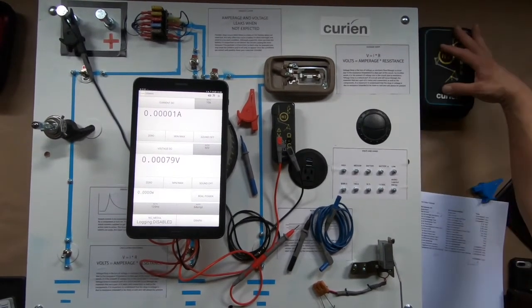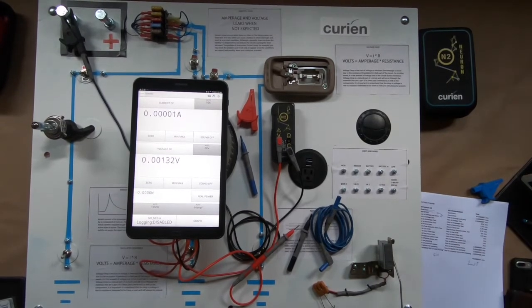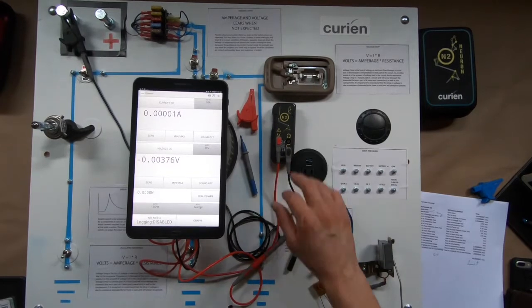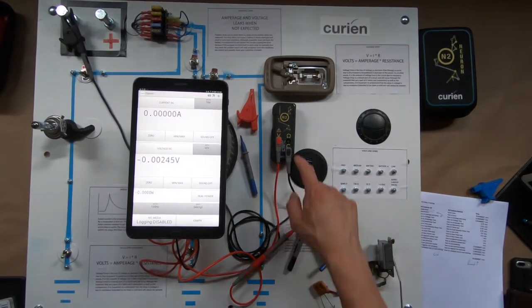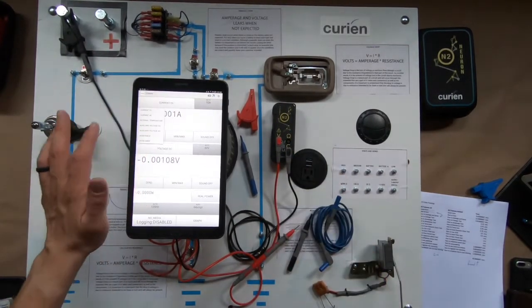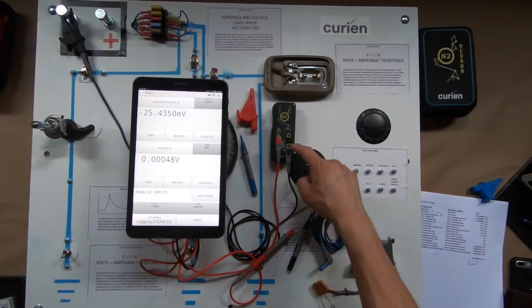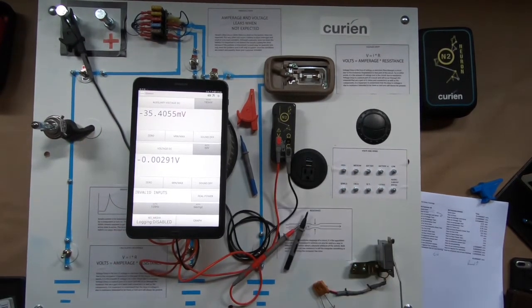Now one of the things I'm going to actually turn on, if you hold on just a moment. There we go, perfect. Now here is our volts. We've been on our volts DC here. I'm going to show you the auxiliary voltage DC and that's the precision meter we were talking about that is on your ohm port.